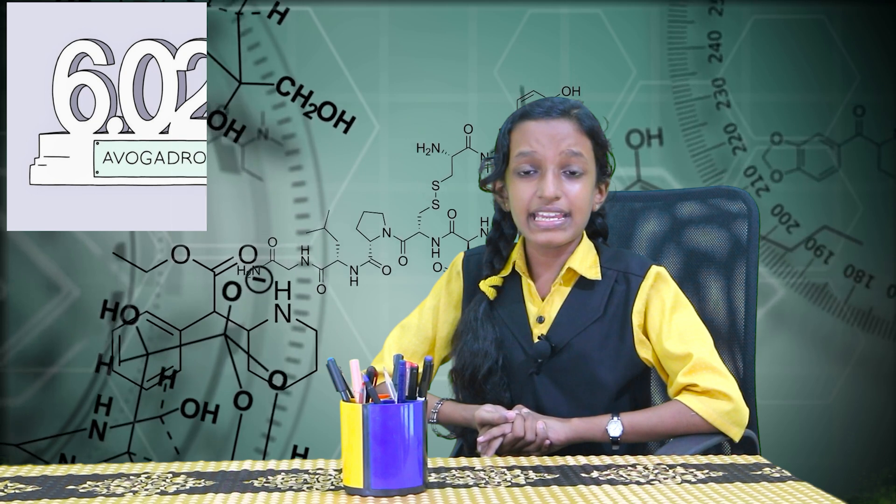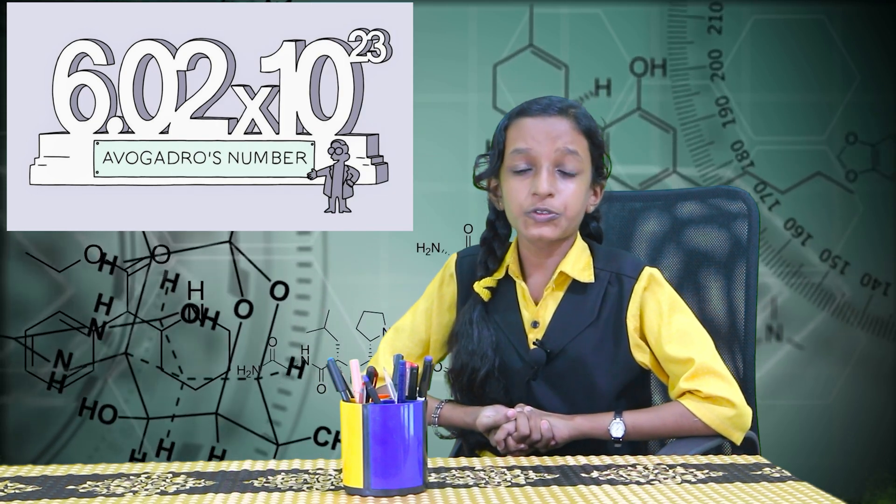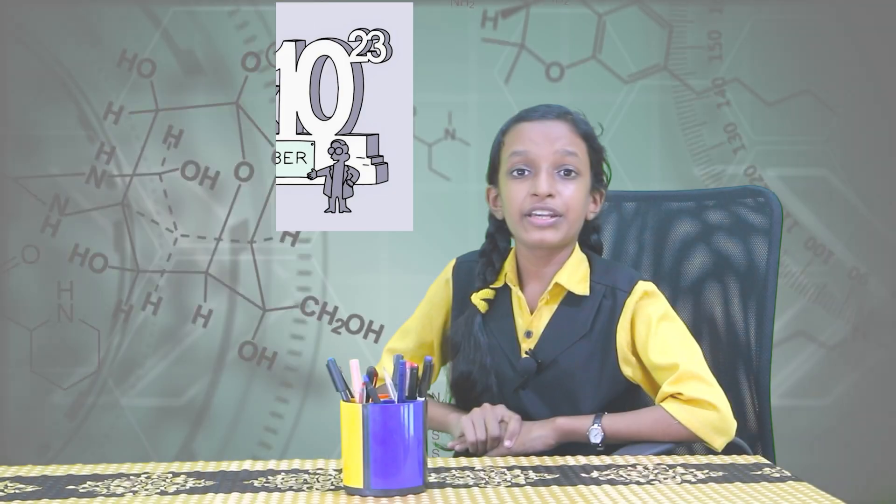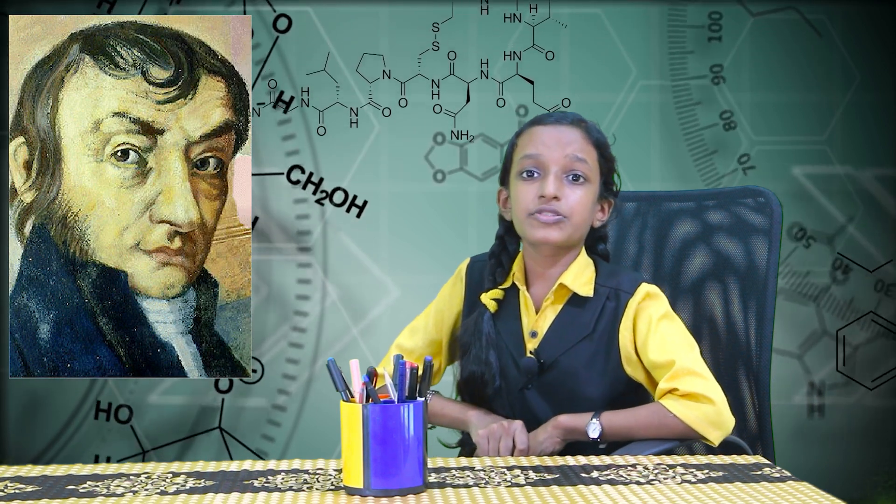Similarly, one mole of neon has a molar mass of 20 grams. That is, one mole of any substance contains Avogadro's number of molecules or atoms of that substance. As you know, Avogadro's number is 6.02 x 10 raised to 23. Avogadro was the first to discover this relationship.